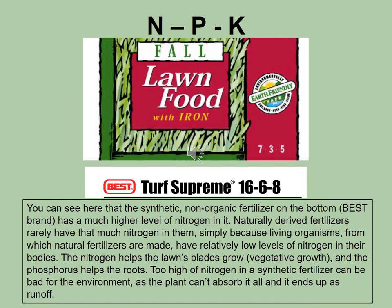Comparing the two, Turf Supreme has 16% nitrogen where the organic one has 7%. Naturally derived fertilizers are just not going to be as high. Nitrogen is important for grass and turf lawns — it helps the grass blades grow; it's vegetative growth. Nitrogen increases and promotes vegetative growth. Phosphorus helps the roots form and grow. You don't want too high nitrogen in synthetic fertilizer because some of it can run off into creeks or the ocean and be bad for the environment.